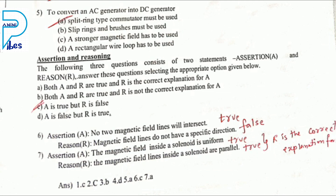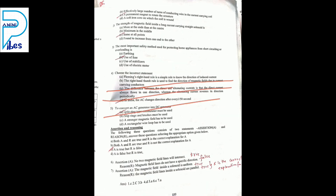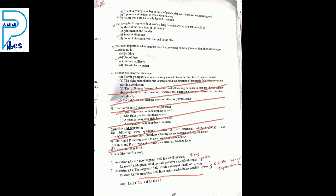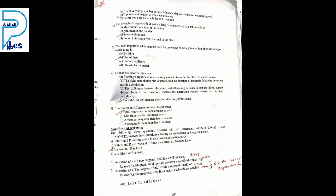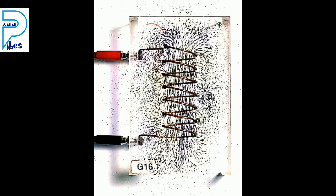The magnetic field inside a solenoid is uniform — correct. Straight lines form in the middle and curved lines at the ends. The magnetic field lines inside a solenoid are parallel — correct, all lines are parallel. After sprinkling iron filings on the solenoid, they arrange showing circles at the ends and straight parallel lines forming in the middle.